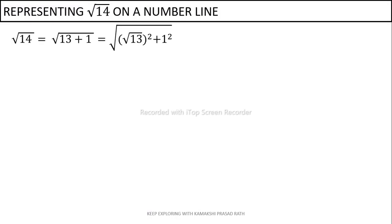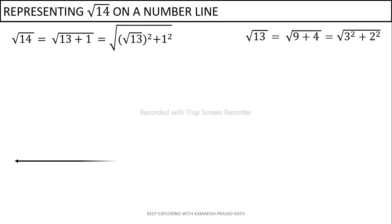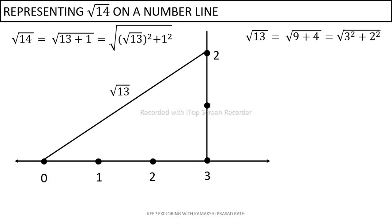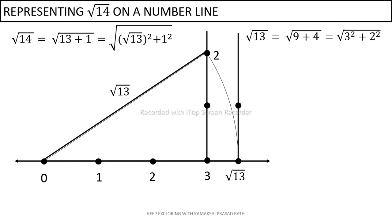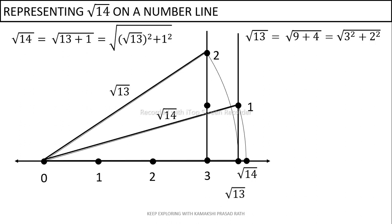Next, root 14. Root 14 can be simply drawn upon root 13: root 13 upon 1 gives root 14. We have already seen how to draw root 13 — construct 3 as base and 2 as perpendicular to get root 13. After getting root 13, we place the protractor at the point root 13 and construct a perpendicular of 1 unit. Root 13 upon 1 unit gives root 14, which is then measured and plotted on the number line.